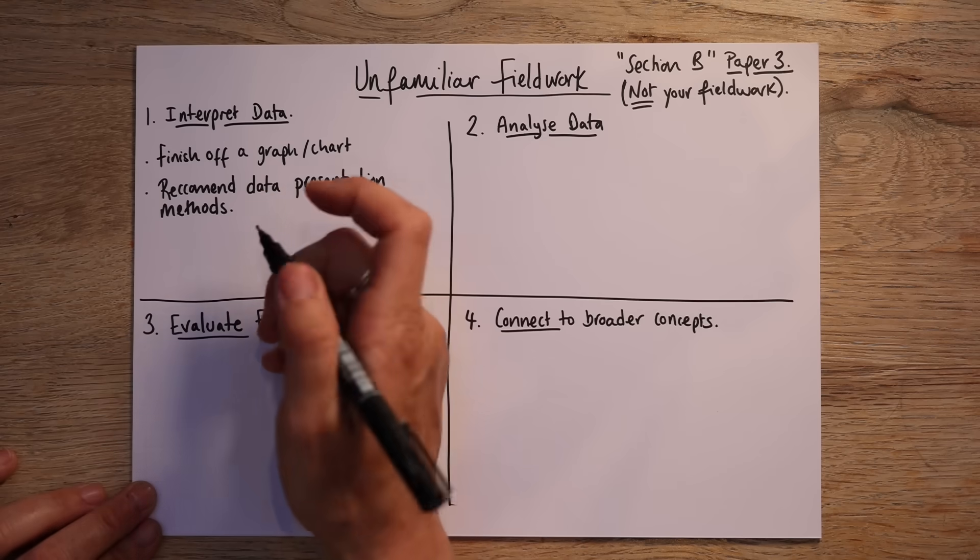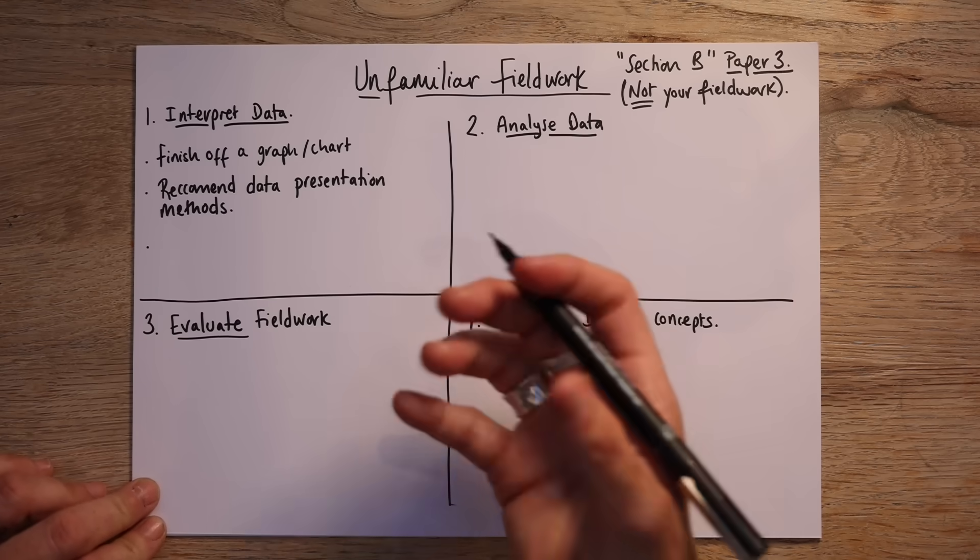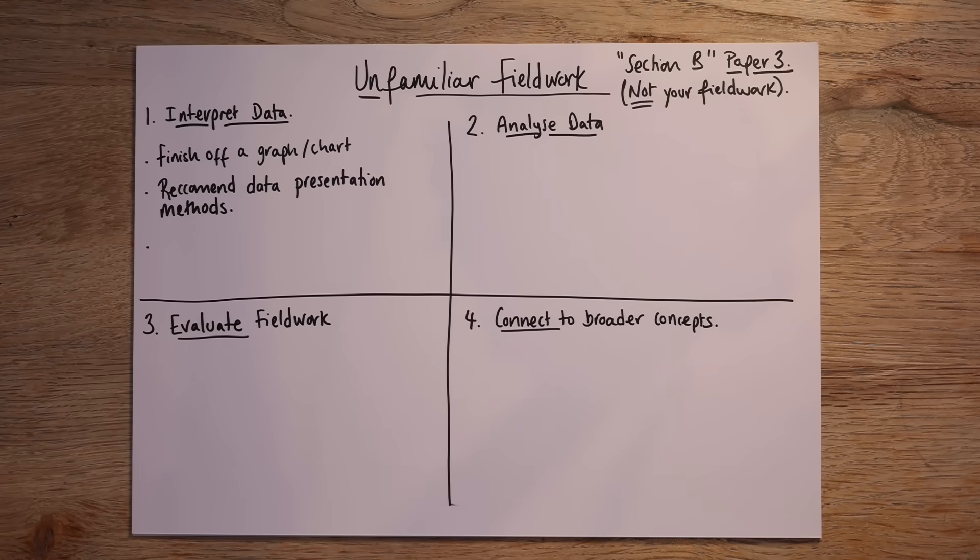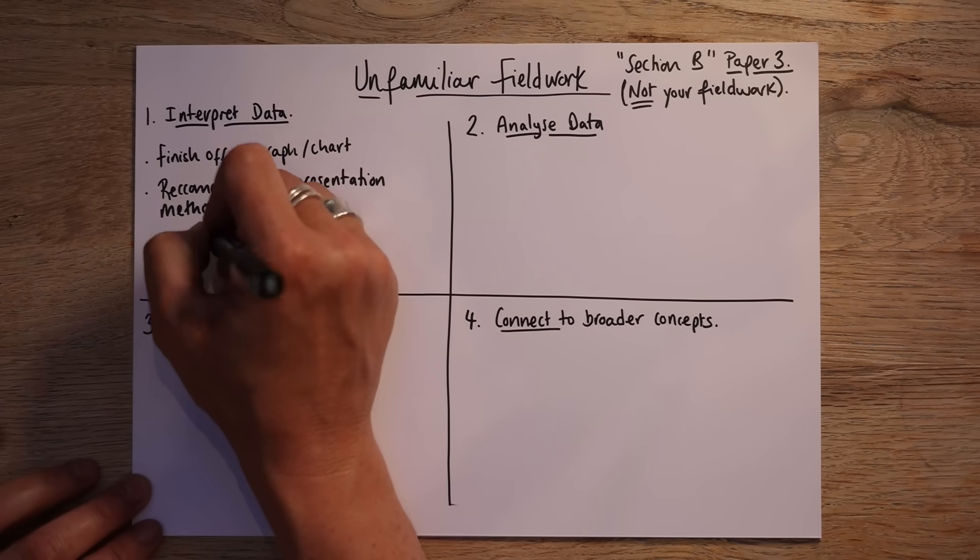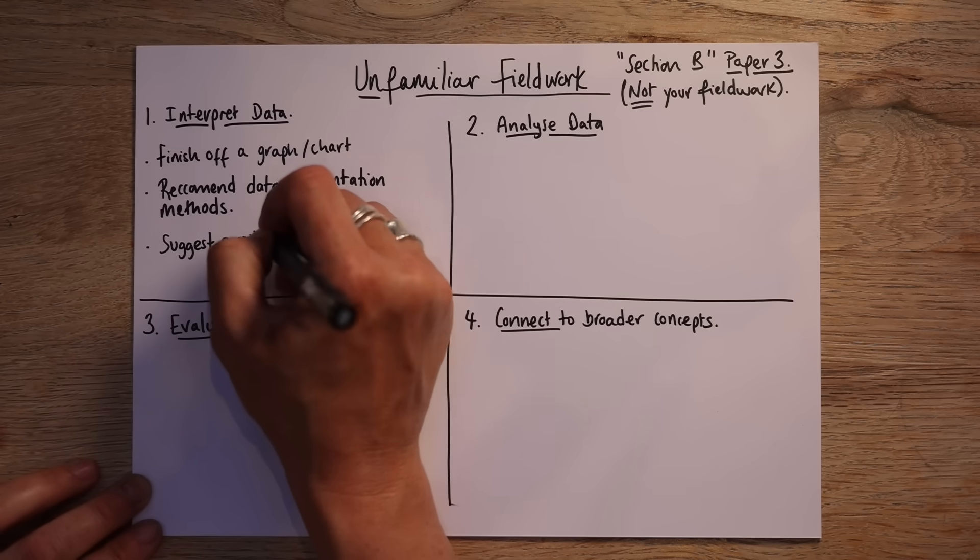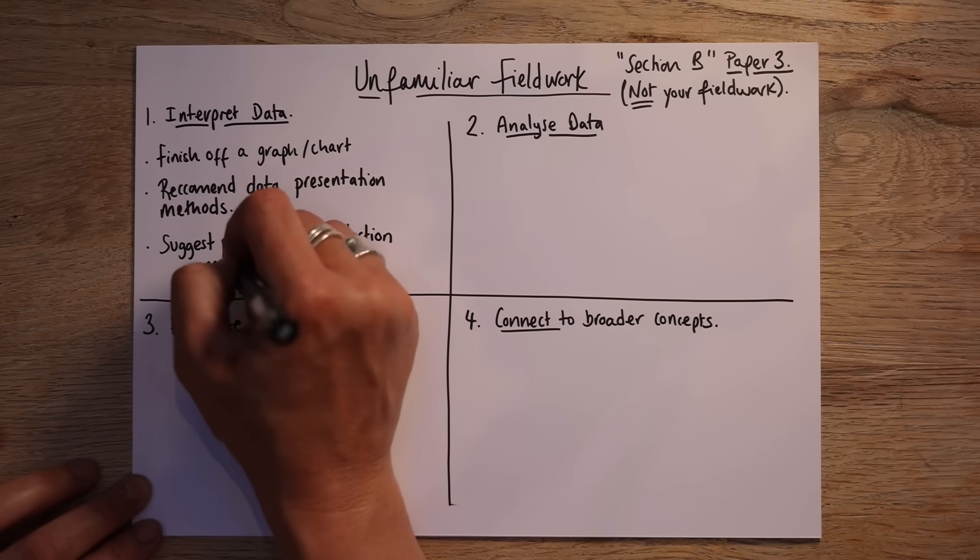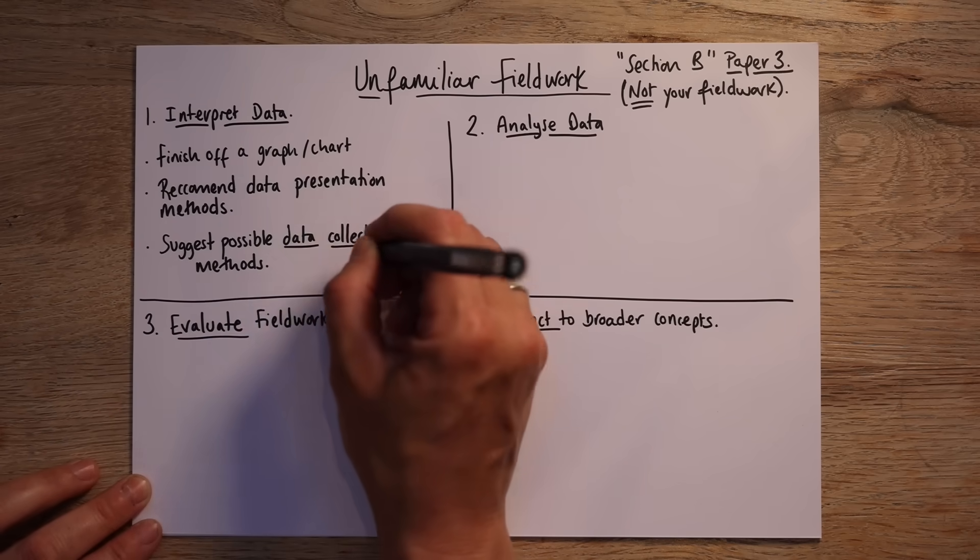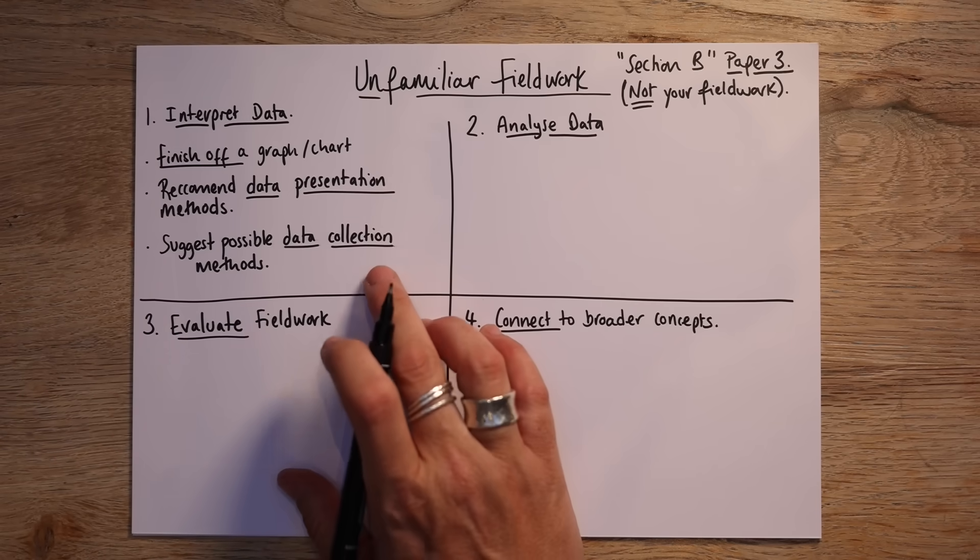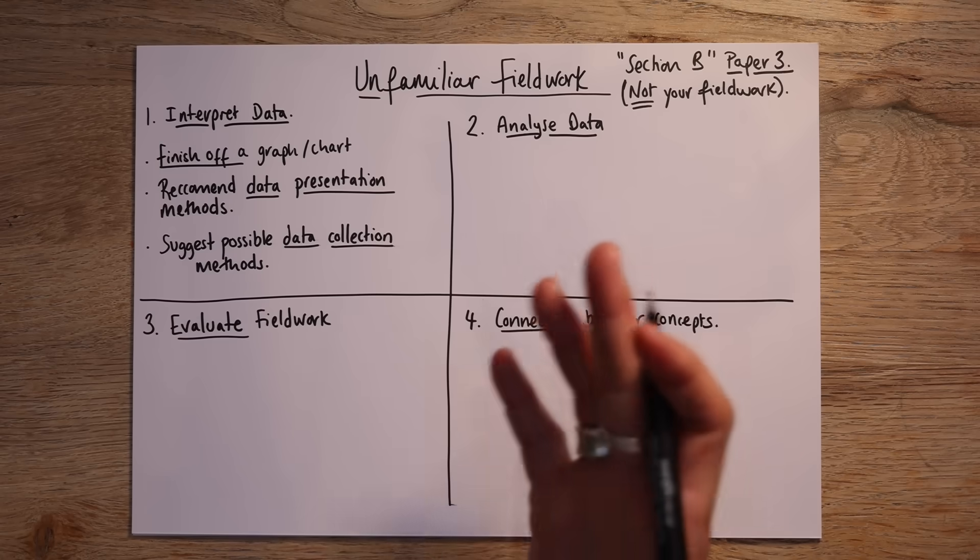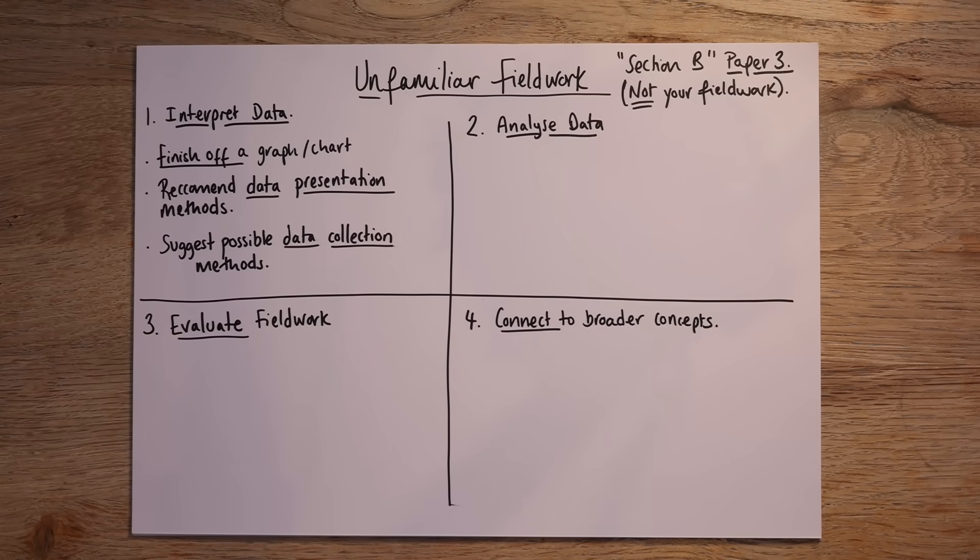So have a look. Say for example they've presented the data in a line graph but it's not continuous data. You might suggest actually a bar chart would have been better for that or a pie chart. So they might ask you to recommend data presentation methods. And finally in this section they might ask you to suggest even possible data collection methods. So surveys for example. So I would say that section is probably the easiest. And even honestly if you didn't look at a past paper and you just went into it you'd probably be okay.